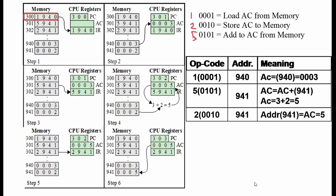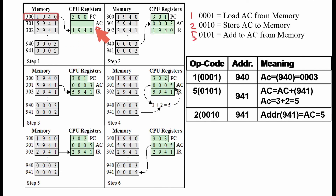So here is how the CPU works: we have the operation code, the address, the program counter which points to the next address in memory, and the instruction register which loads and decodes the instruction. The accumulator register stores the result of operations. That's it.